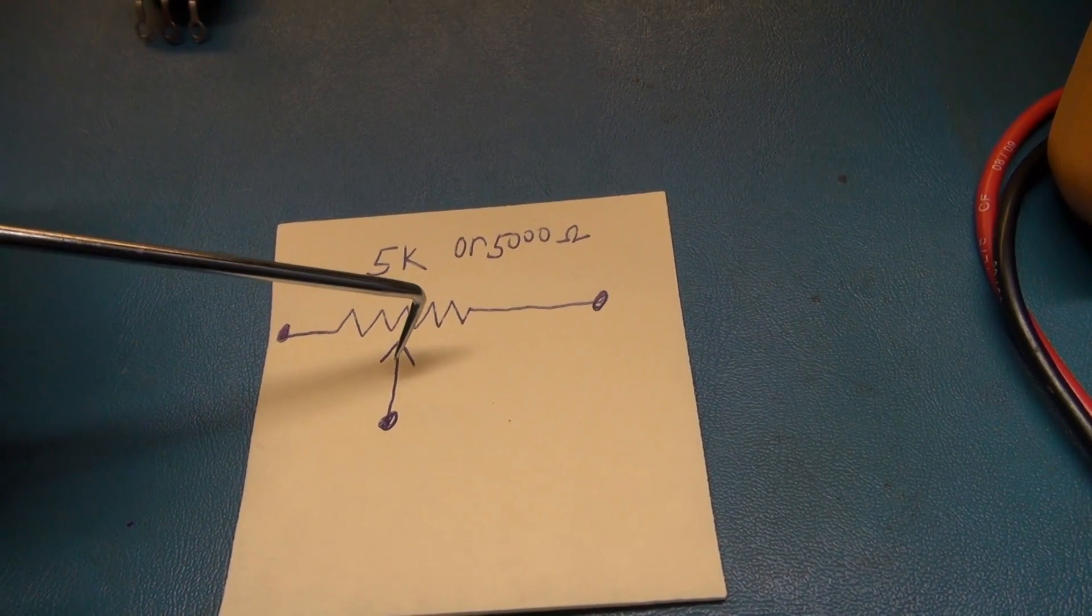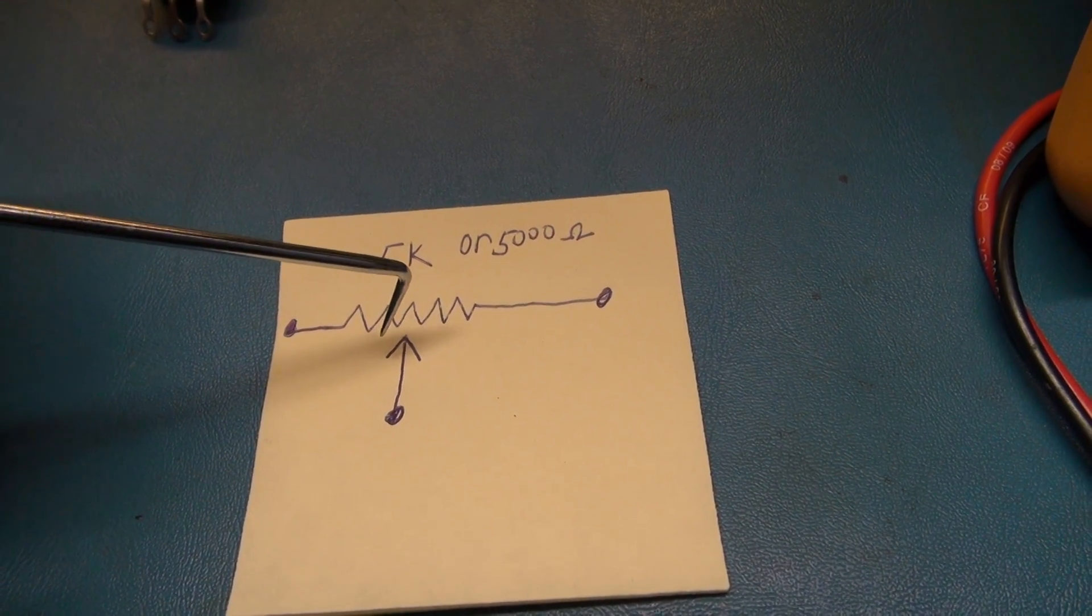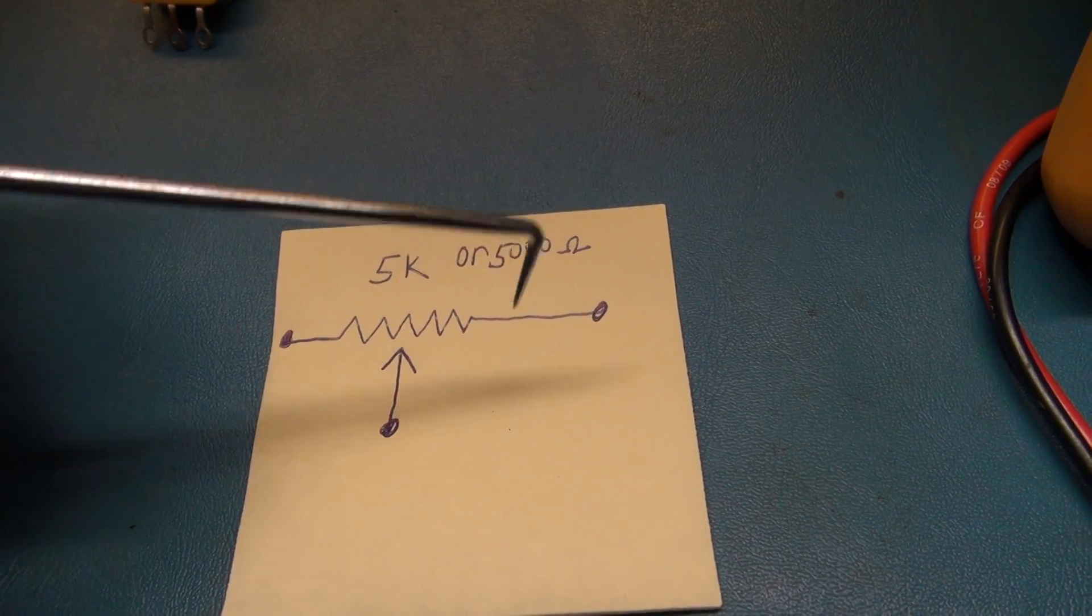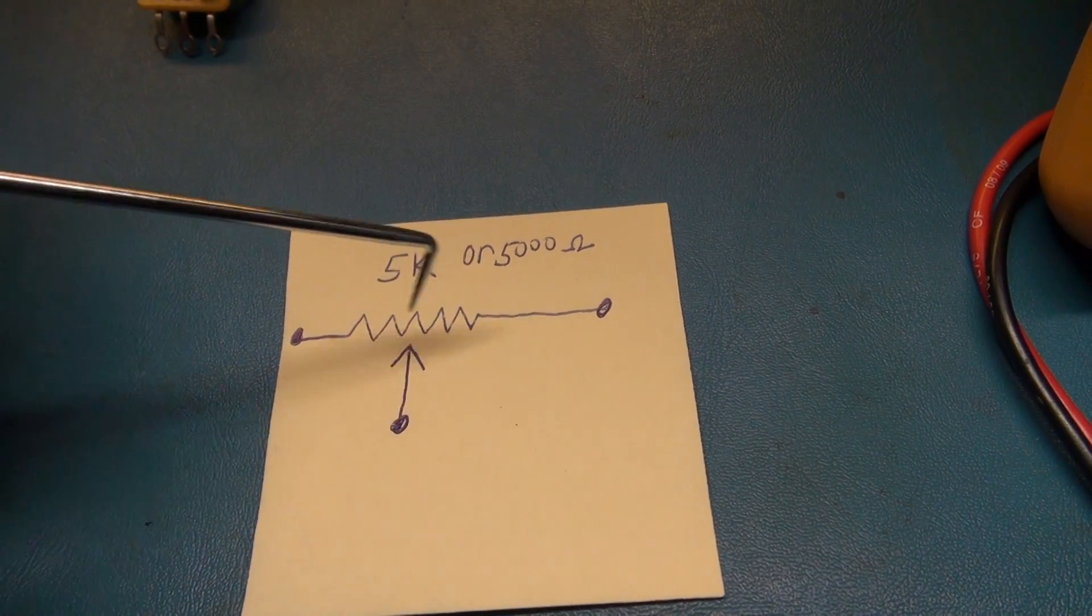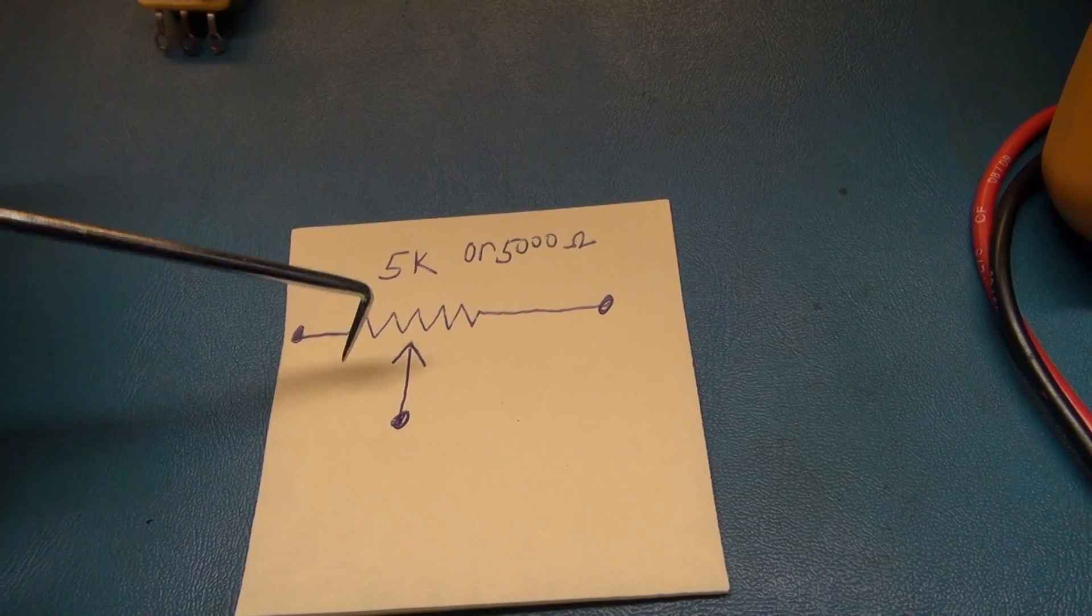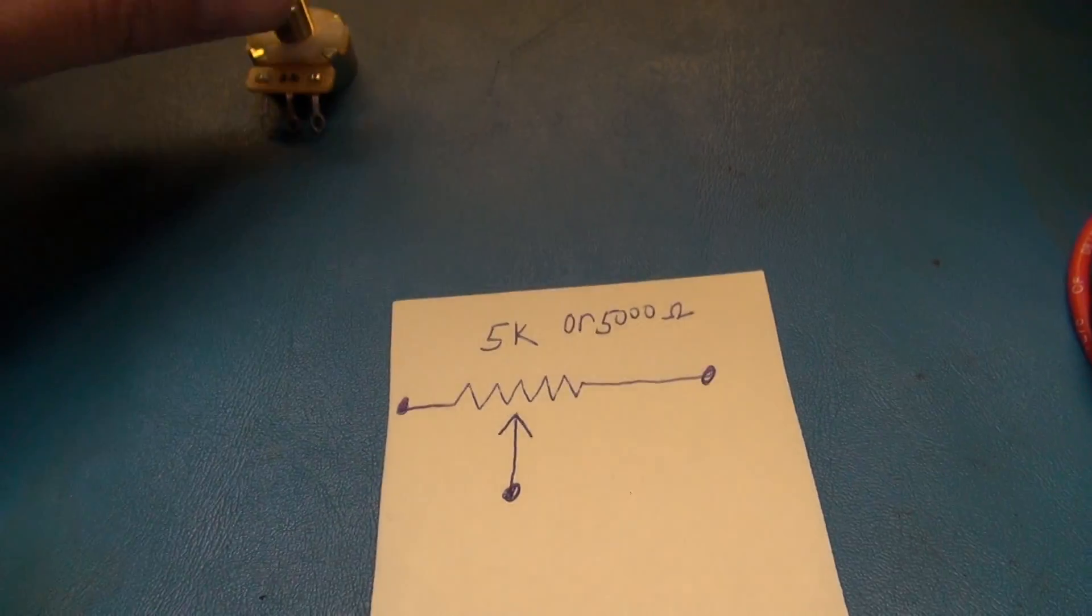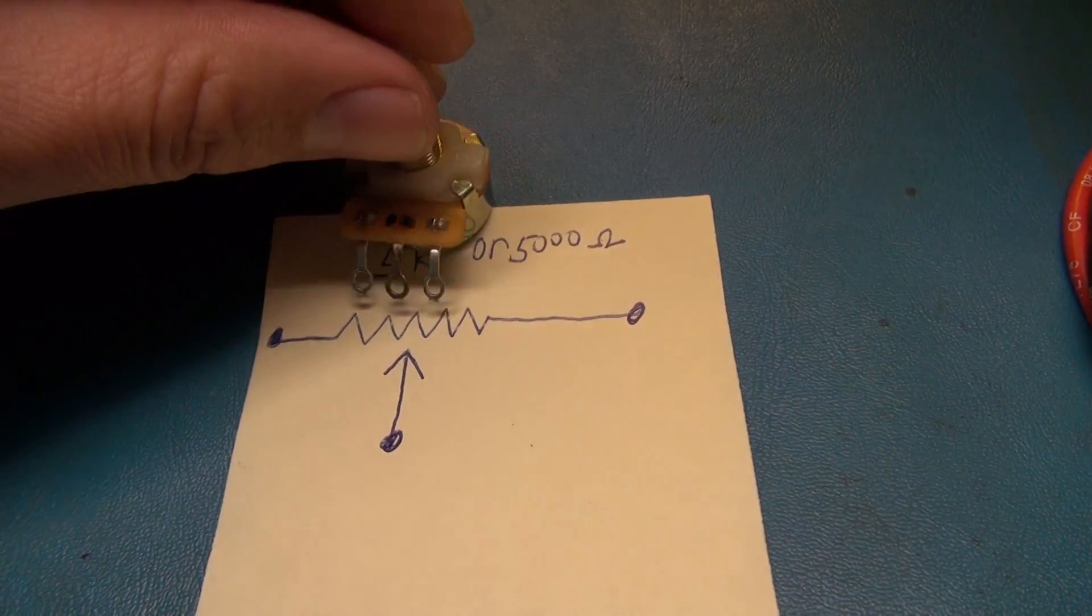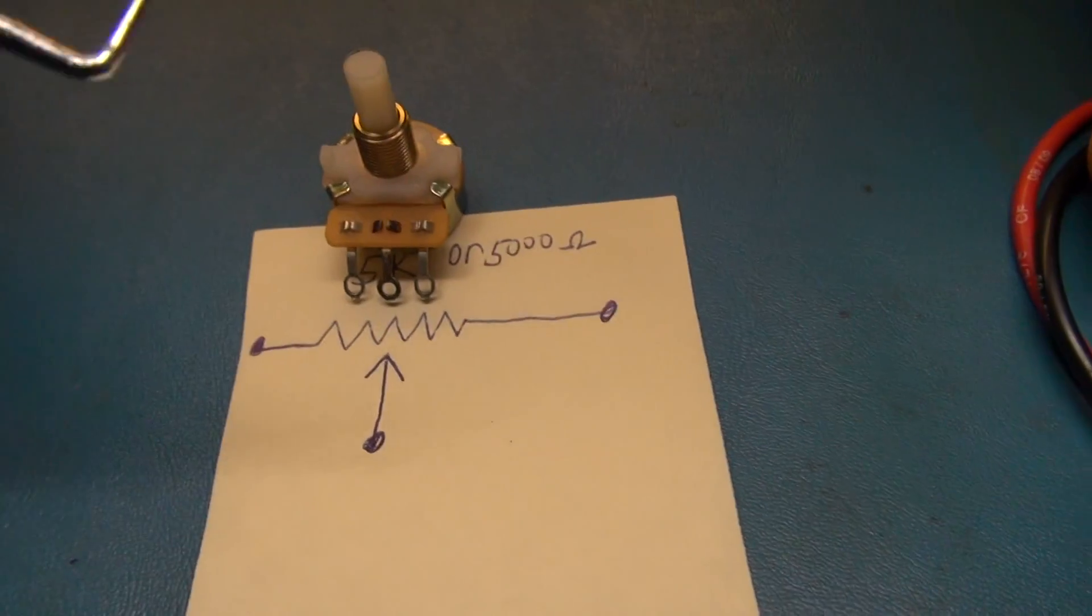If you slide the potentiometer this way, you're going to have significant changes - more resistance on one side and less on the other. These three leads correspond to one side, the wiper, and the other side of the resistor.